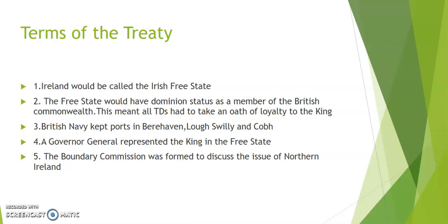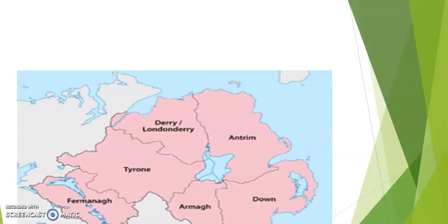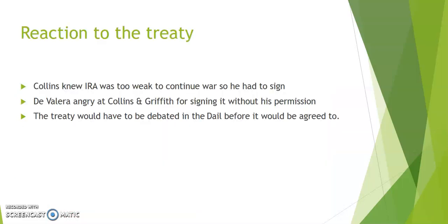There would be a representative from both Northern Ireland and the Free State and an independent chairman on the Boundary Commission. Lloyd George had assured the Irish delegates that as a result of the Boundary Commission, areas with a nationalist majority — such as Fermanagh and Tyrone — would join the Free State. Collins knew that the IRA was in no fit state to restart the War of Independence, and he reluctantly signed the treaty with the other Irish delegates on the 6th of December 1921.